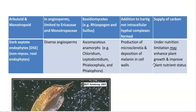The next group is arbutoid and monotropoid mycorrhiza. They mainly occur in angiosperm plants belonging to the families Ericaceae and Monotropaceae, and belong to Basidiomycetes of Rhizopogon and the genus Cenococcum. In addition to the Hartig net, intracellular hyphal complexes can be formed. This Hartig net formation is also found in ectomycorrhiza, and arbutoid mycorrhiza is essentially a type of ectomycorrhiza. They are also able to supply carbon to the plant system.